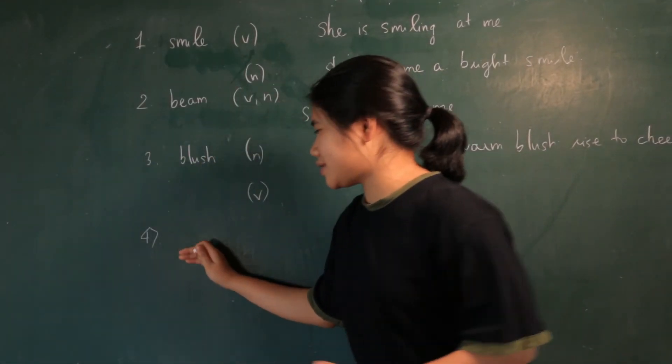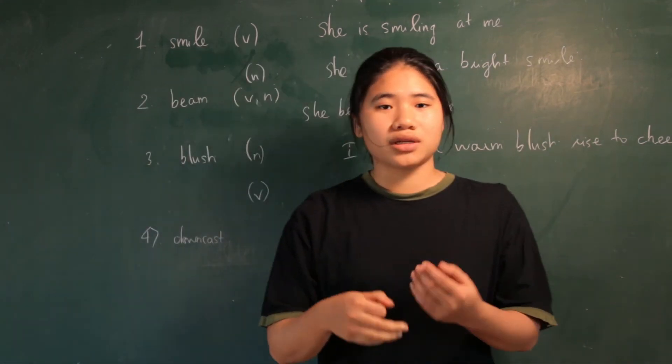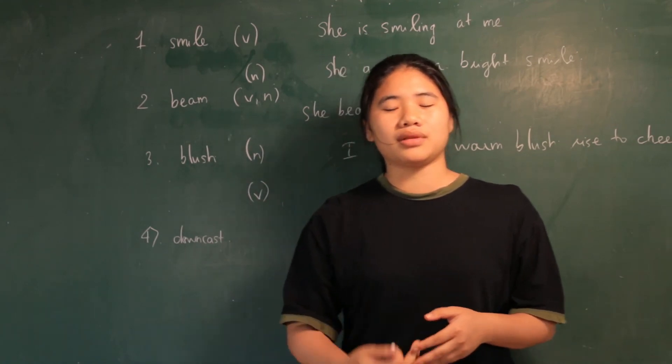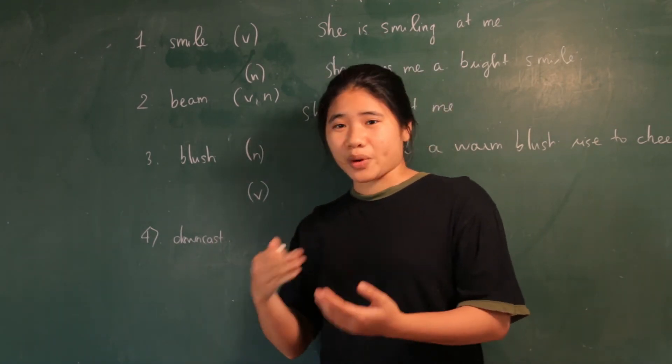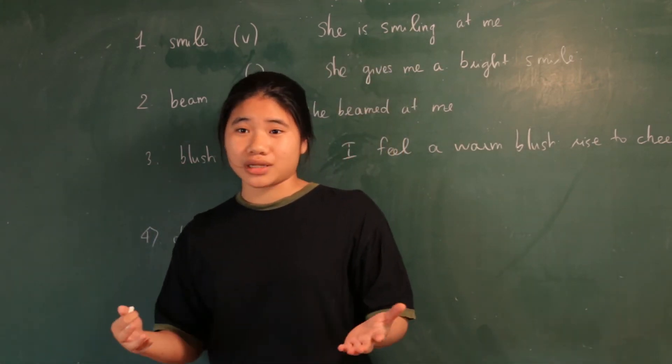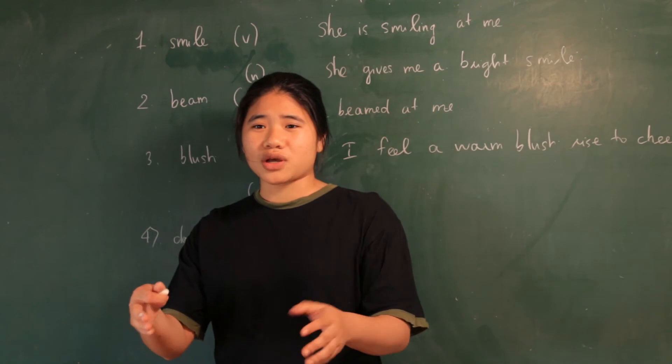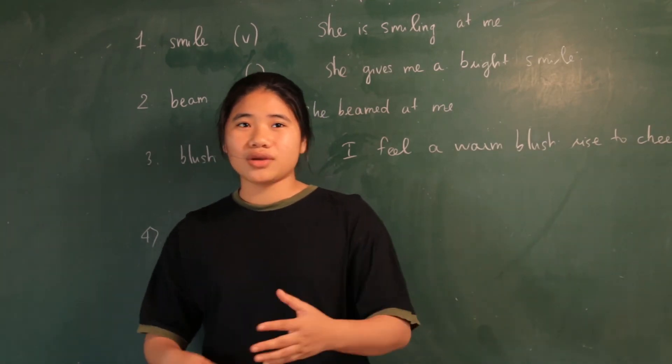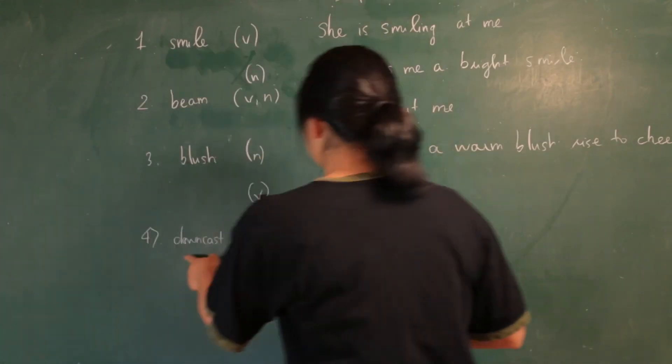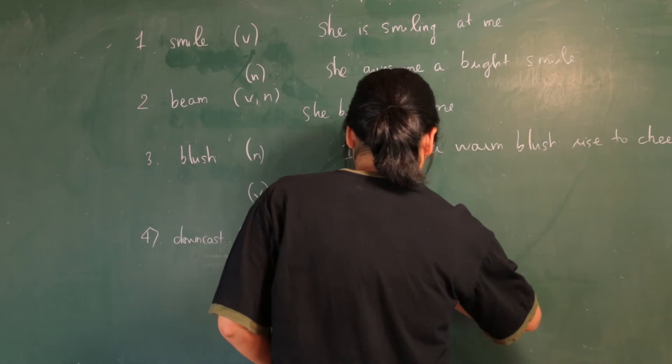Another word is downcast. Downcast is to express when you are sad, when you are depressed. Sad and depressed is an emotion, but downcast is an expression. I think you look so downcast, why do you look so downcast?